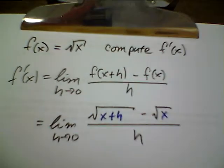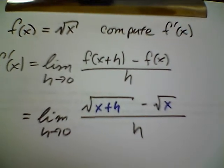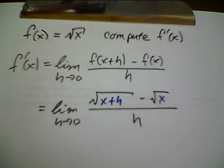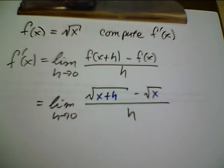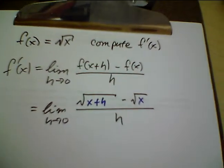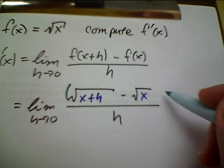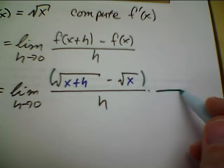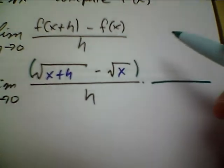Now, we have to cope with this radical in the numerator. And the way we're going to do that is we're going to multiply the top and bottom by the conjugate. So I'm going to put this in parentheses, and now I'm going to multiply by the conjugate here.